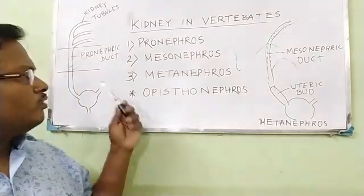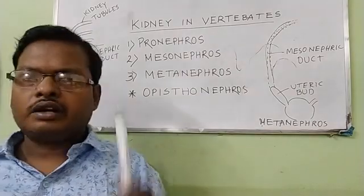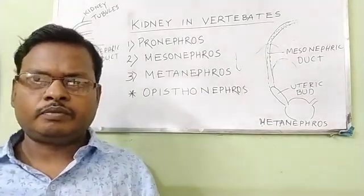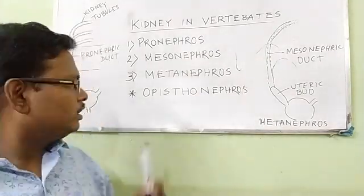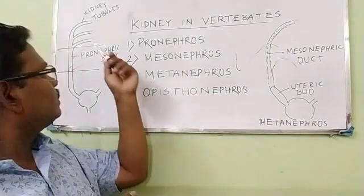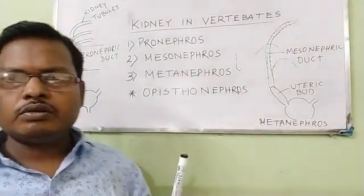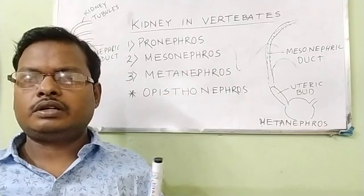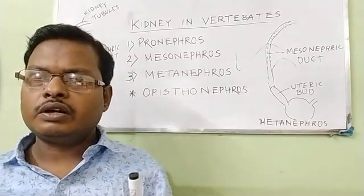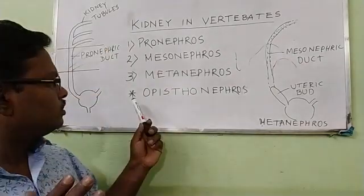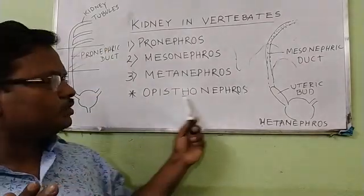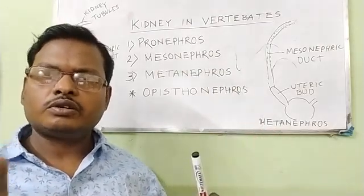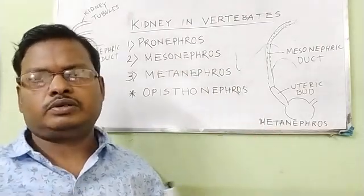The Mesonephros is found as the adult kidney in fishes and amphibians. In some amphibians, the kidney tubules are also distributed posteriorly, and this is called Opisthonephros. Opisthonephros is also a type of Mesonephros.